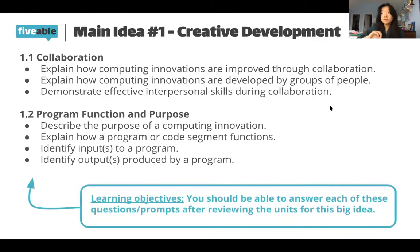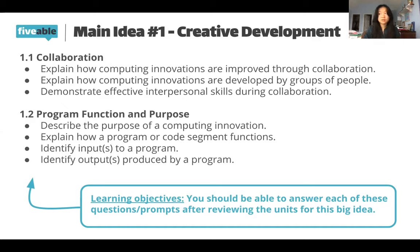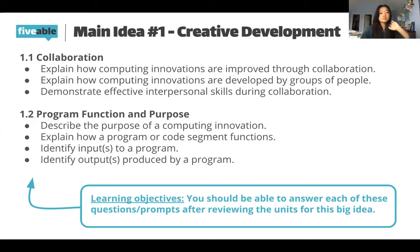These learning objectives are taken straight from the AP CSP Course and Examination Description (CED). I'd recommend reading it — it's the guide your teachers use. After each big idea, you need to be able to answer all of these questions, or you haven't learned the unit properly. Make sure you know all of them front and back; since they come directly from College Board, they know exactly what they'll test you on. Units 1.3 and 1.4 cover program design and development and correctly identifying and correcting errors.